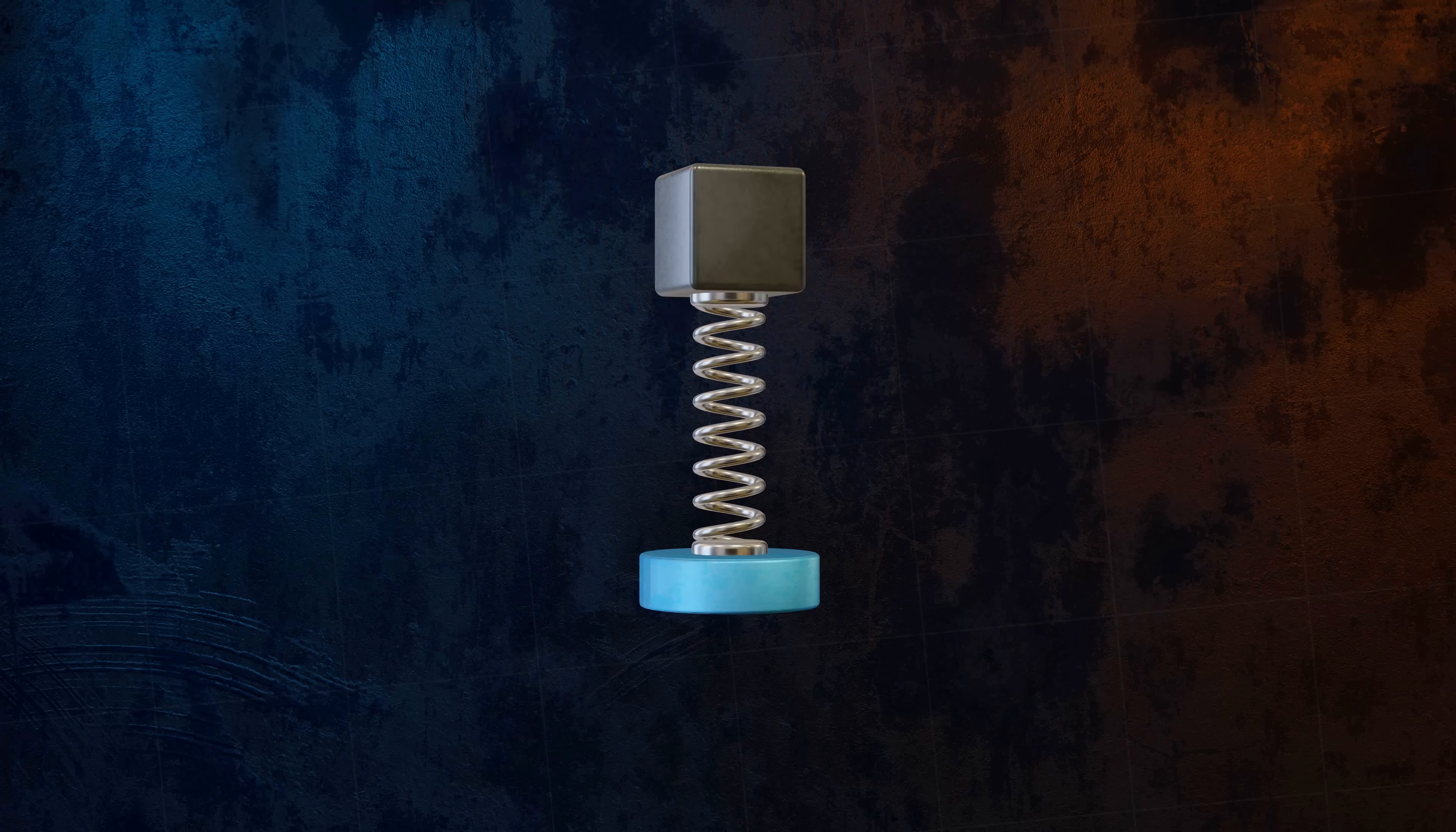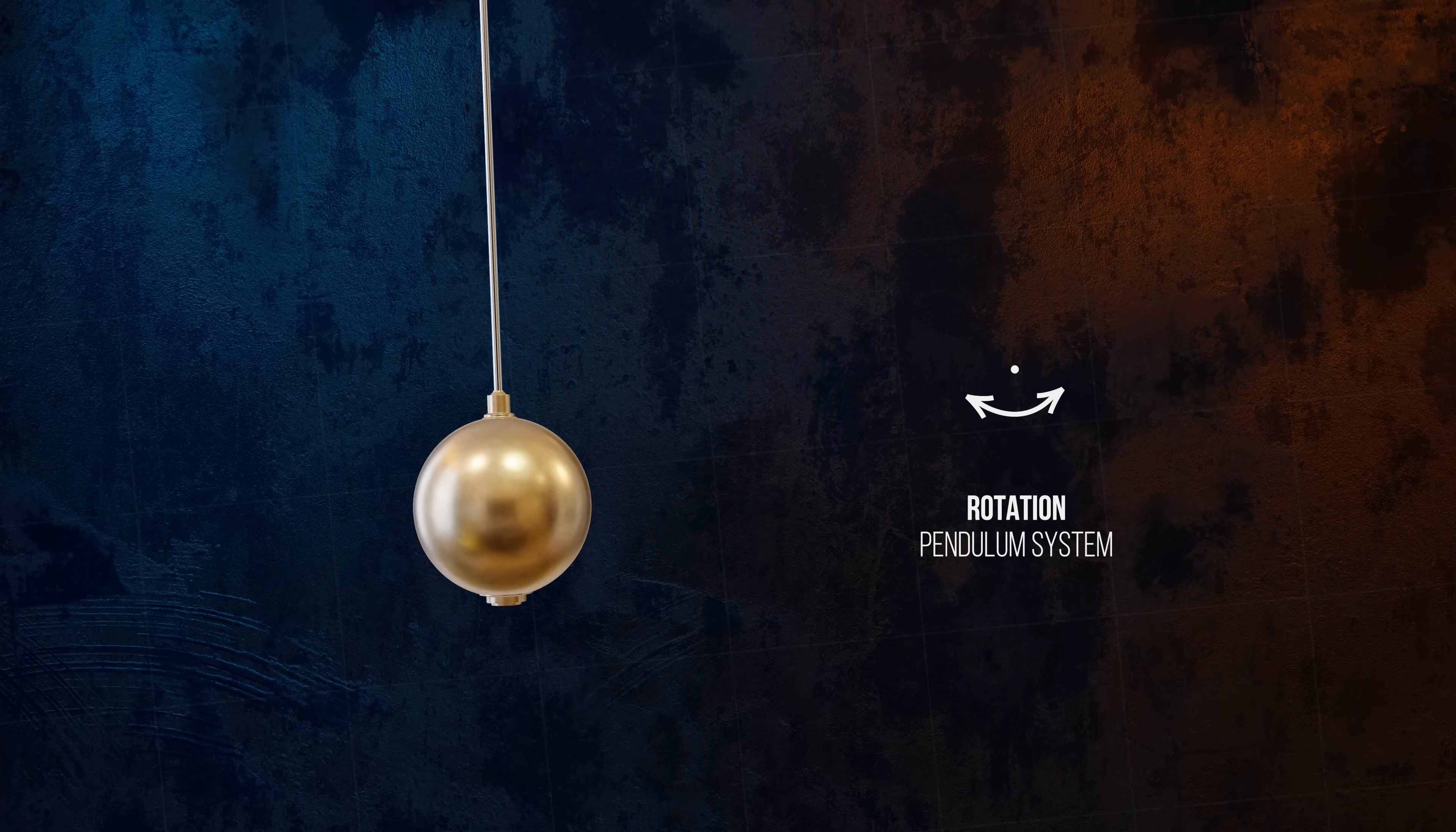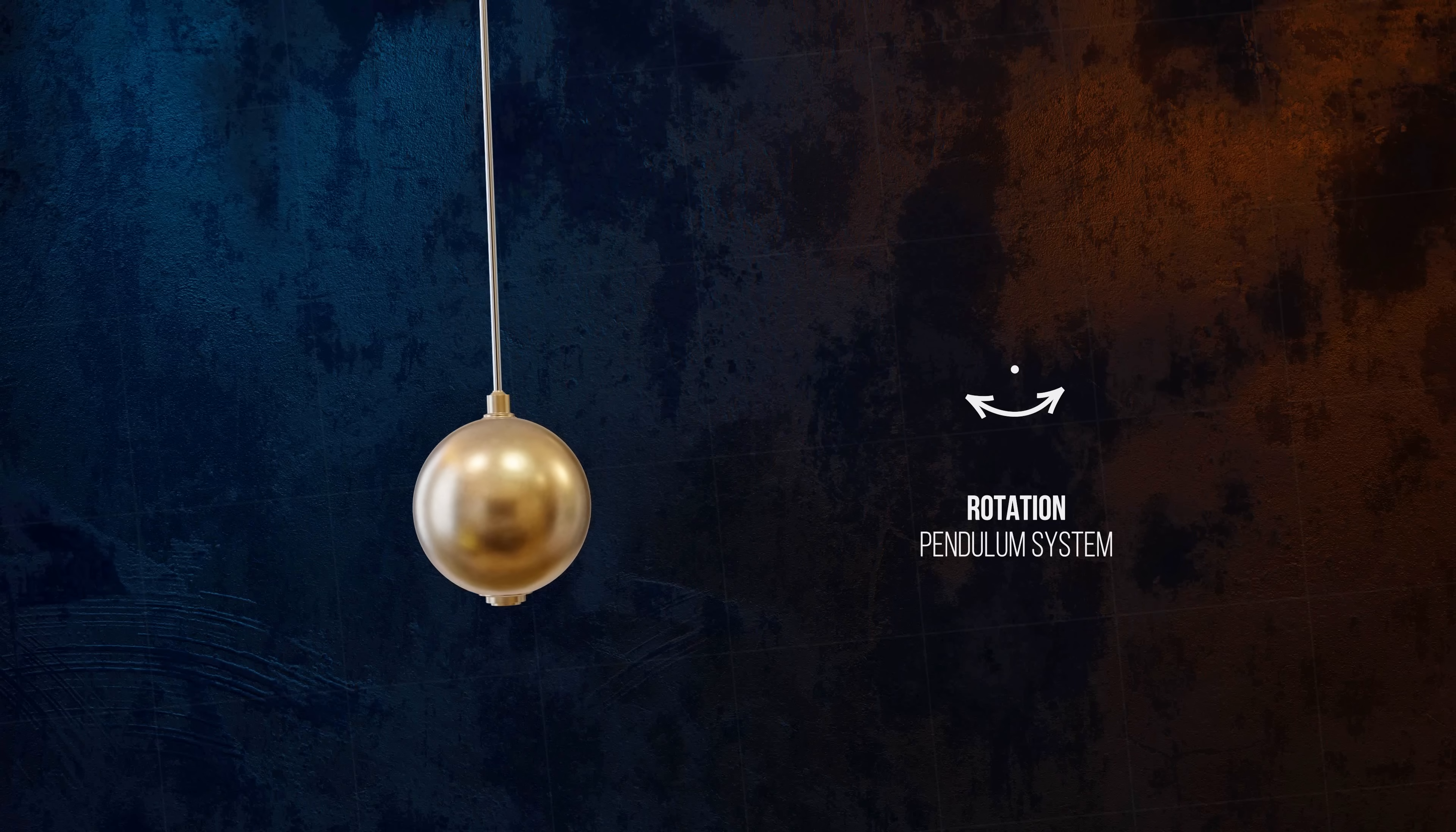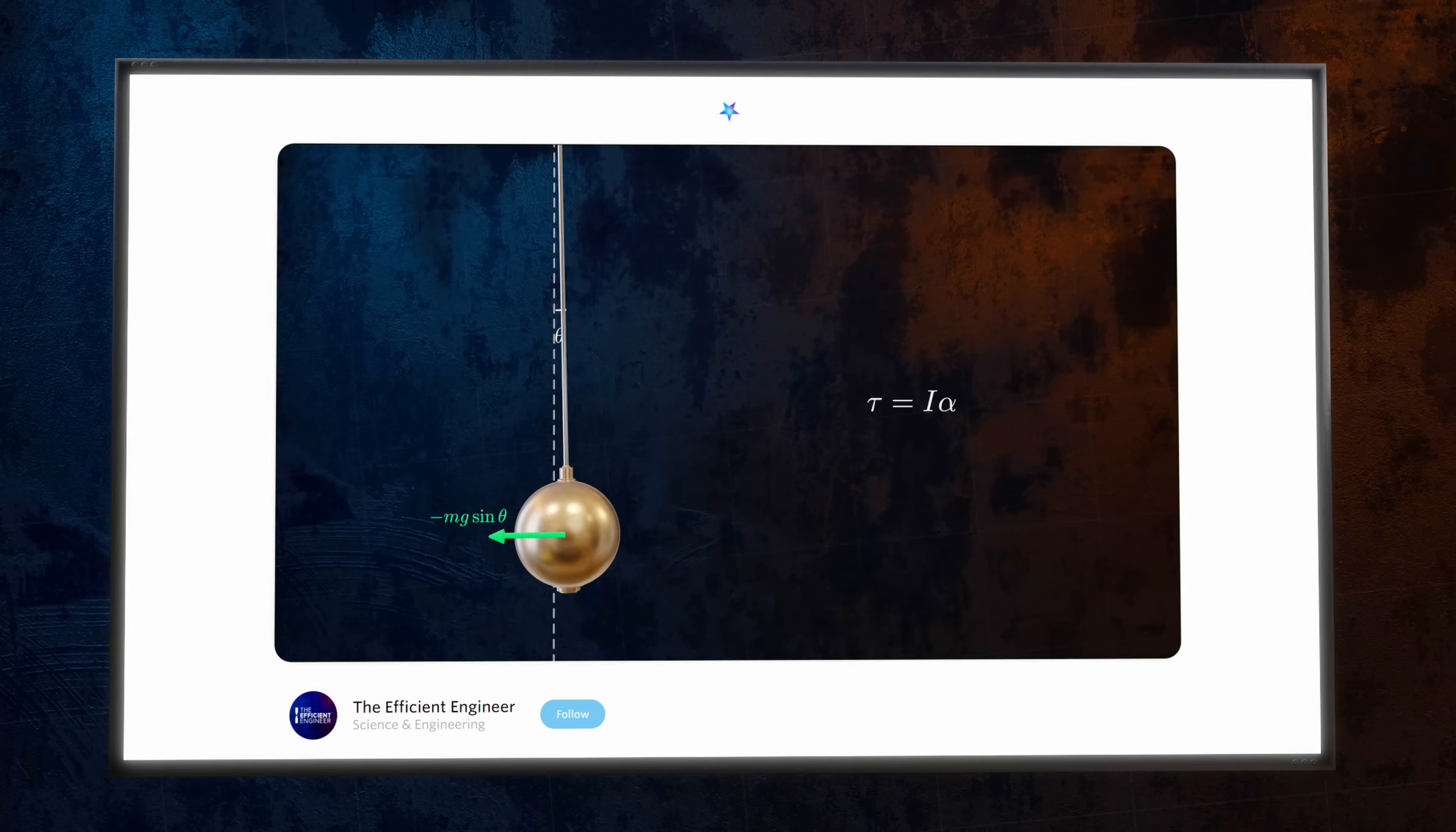We've only covered mass spring models in this video, which oscillate by translating. But there are other types of vibration too, like pendulums, which oscillate by rotating. This video is long enough already, but I've published a short companion video that covers the motion of pendulums over on Nebula, where we take a look at how the motion of a pendulum differs from a mass spring system and how to derive the equation of motion.